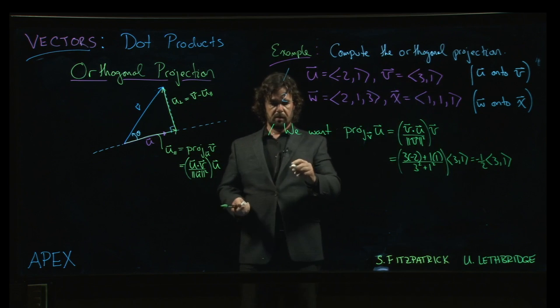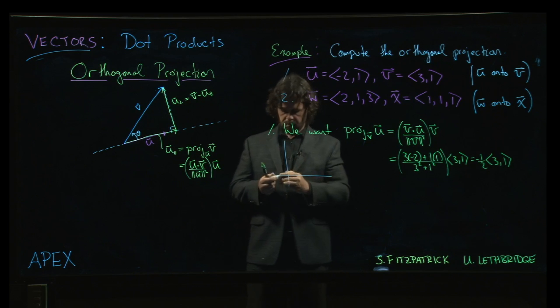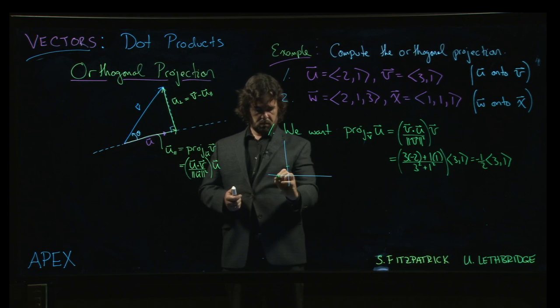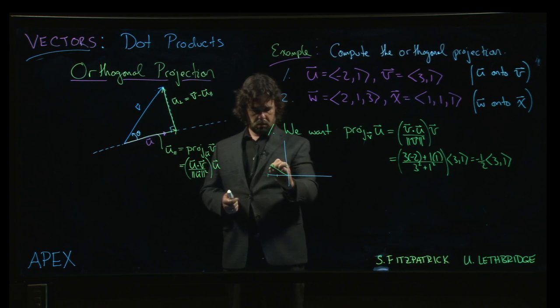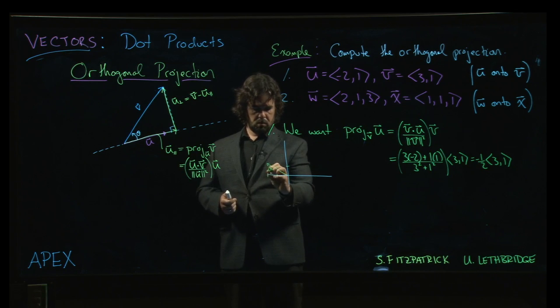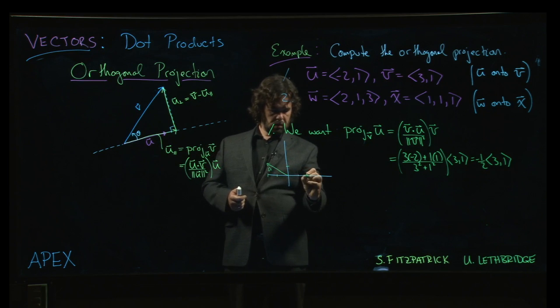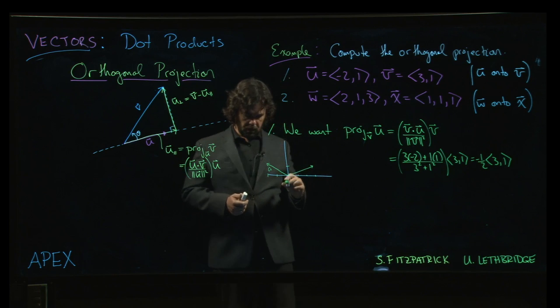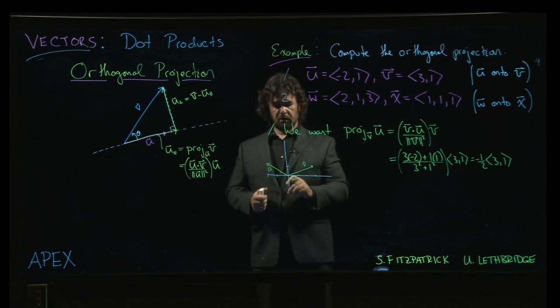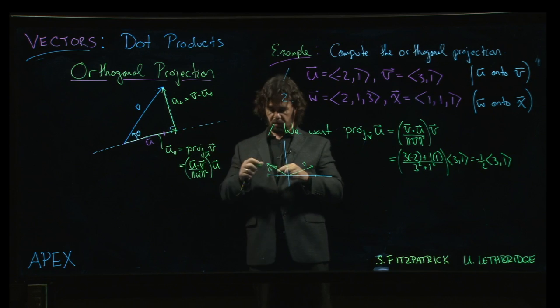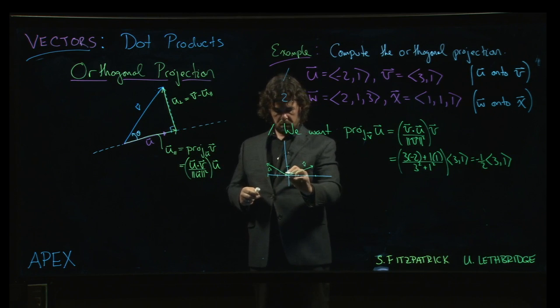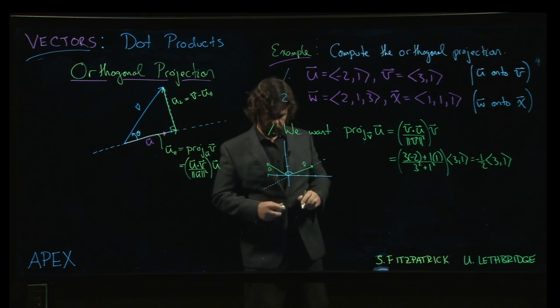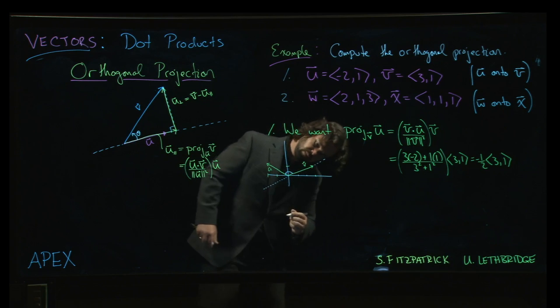Now one of the things that you might do from here is just sketch things to see what you've ended up with. So the original vectors: u is -2, 1, and v is 3, 1. So there's u, and 3, 1, so there's v. Notice that it's an obtuse angle this time.